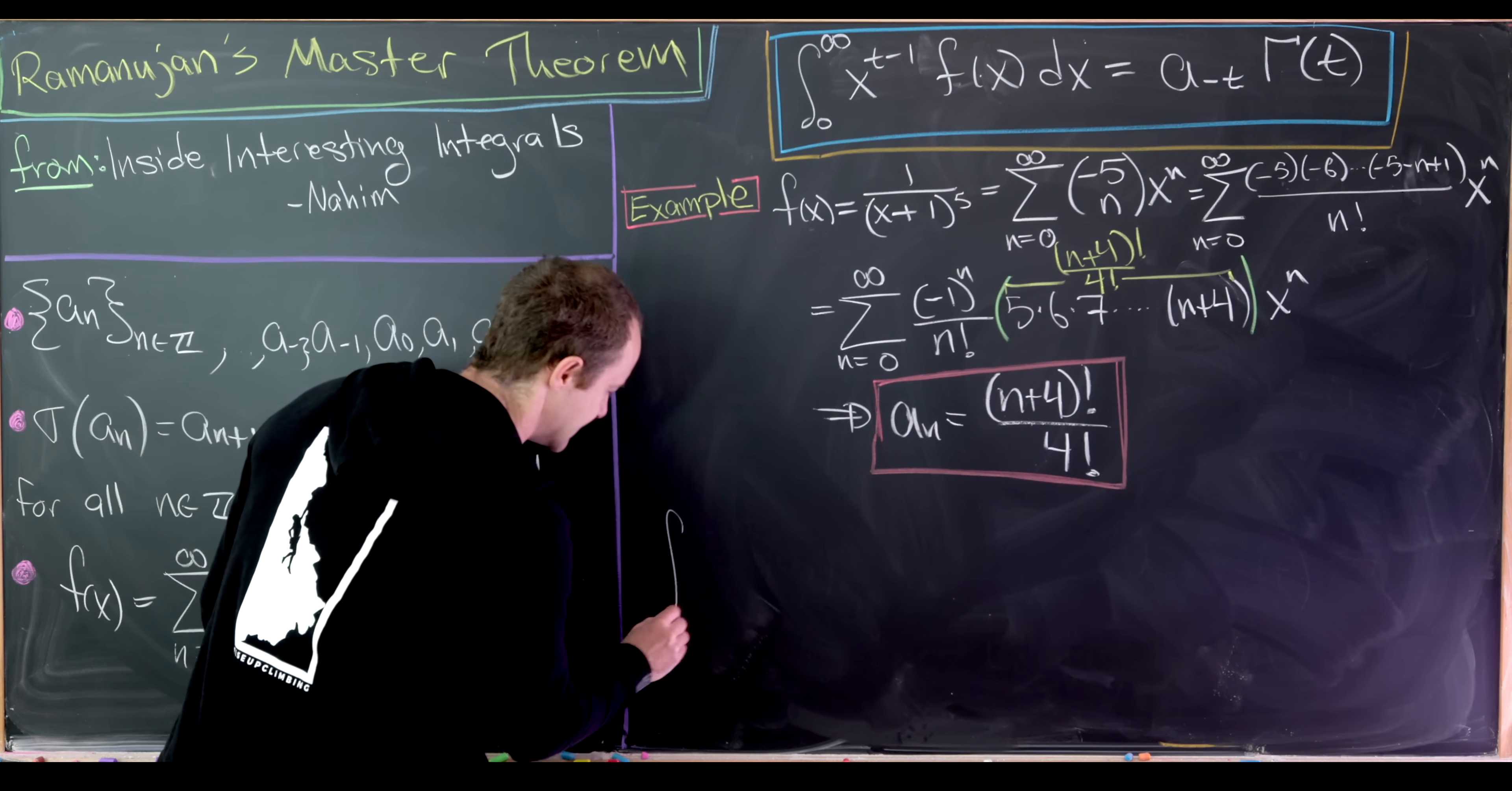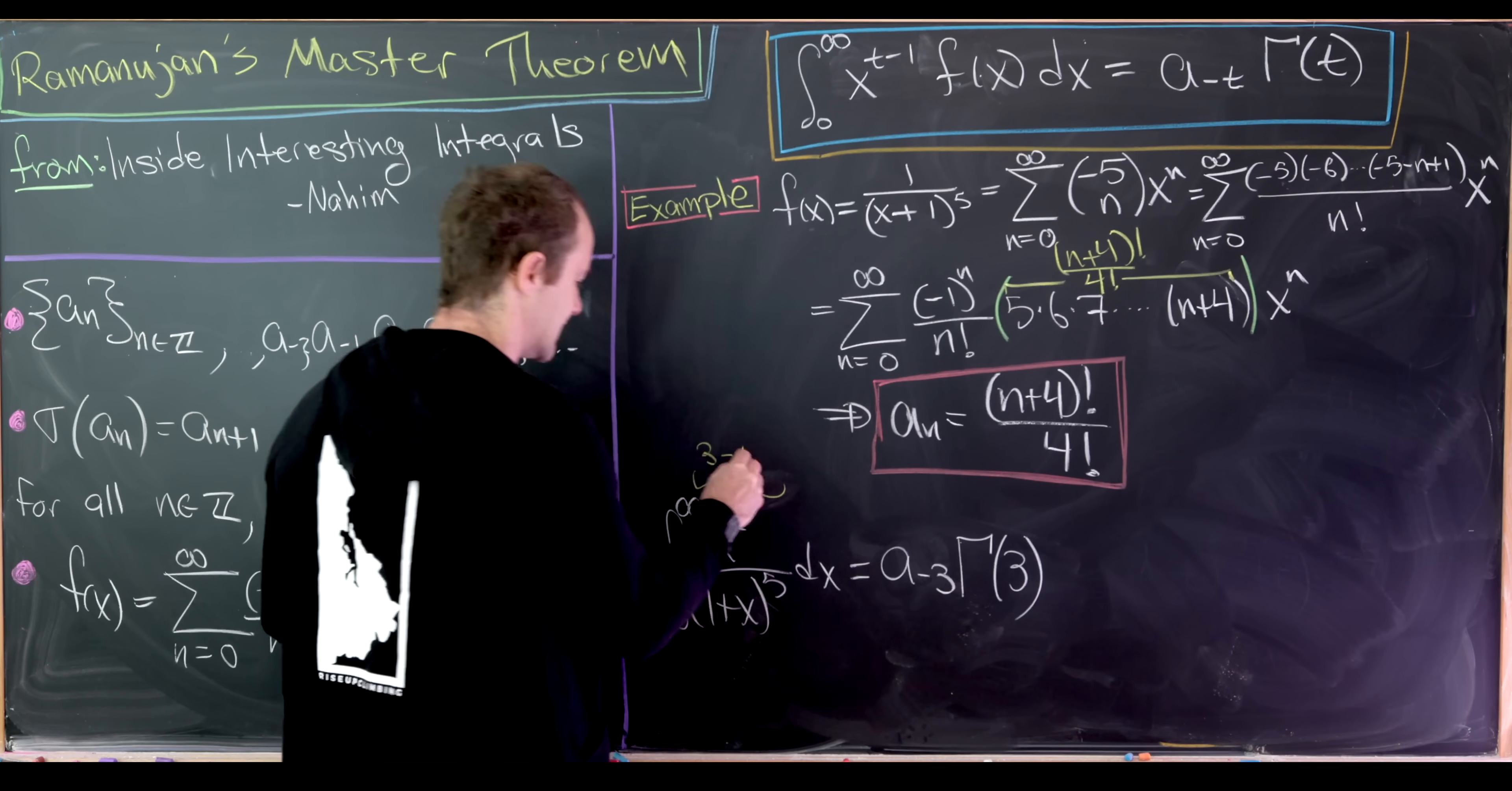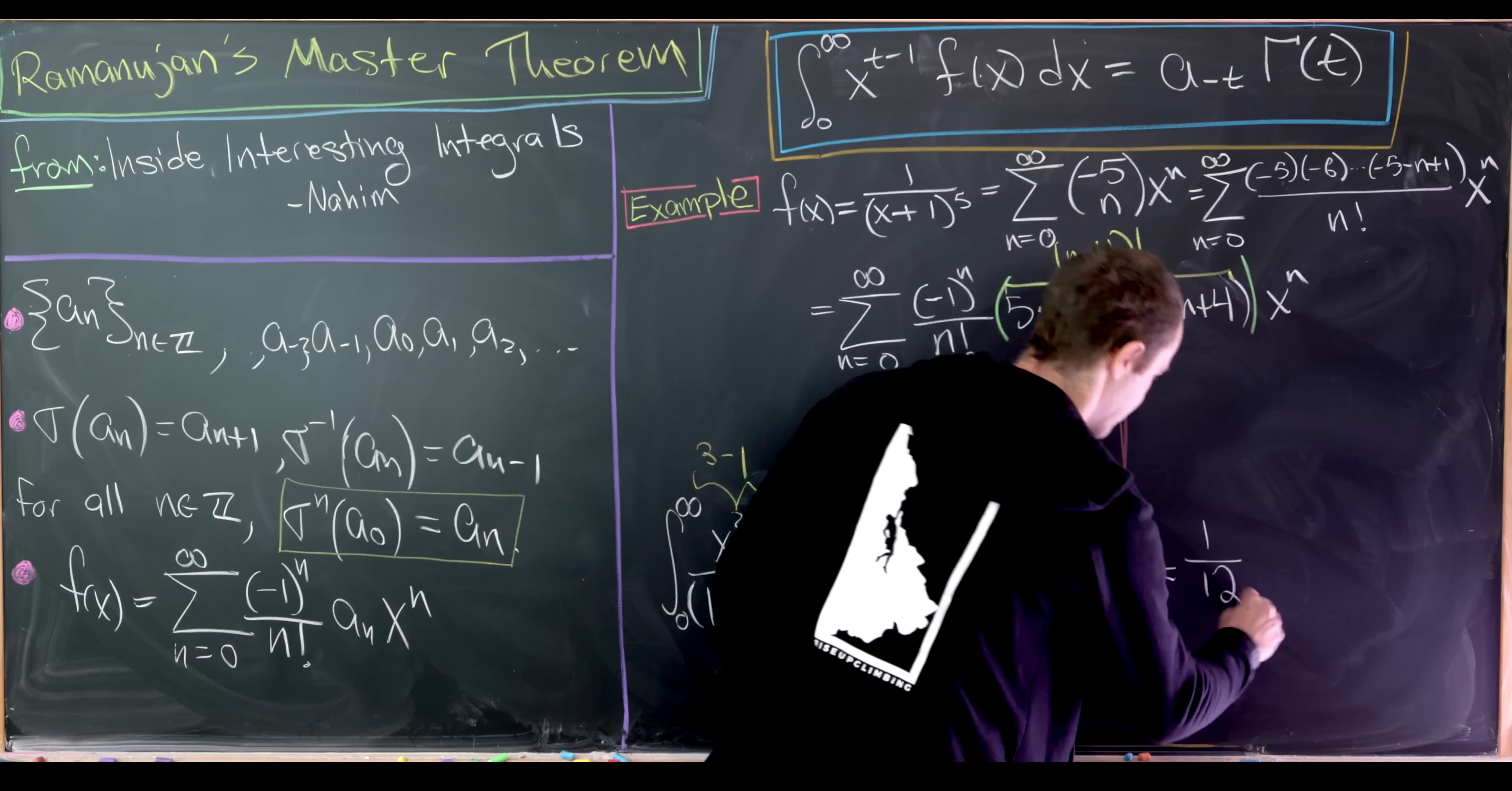Now that we've got this closed form for our sequence we can start applying Ramanujan's master theorem. So let's see what we have. We'll have the integral from zero to infinity of x^2 over (1+x)^5 is equal to a_{-3} and then gamma of 3. So why is it a_{-3}? That's because this number 2 right here can be expressed as 3-1. So the t that we have is being played by 3. So a_{-3} that's pretty easy to calculate. That is 1! over 4! and gamma of 3 is 2!. So in the end that gives us 2! over 4! which is 1 over 12.